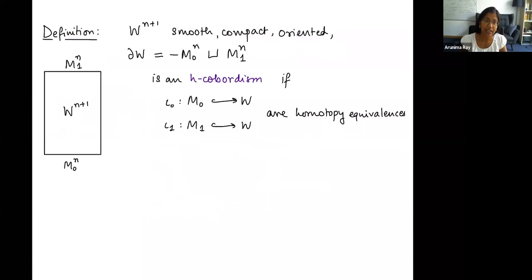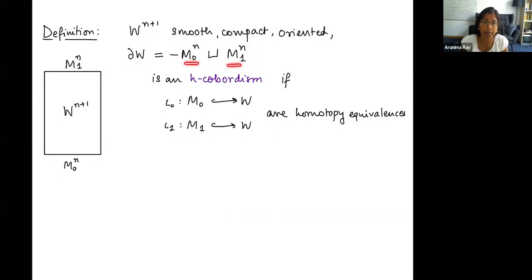So let's get started. Here is the definition of an h-cobordism. We have an n+1-dimensional manifold that is smooth, compact, and oriented, and its boundary has two components, M0 and M1. The boundary is written as negative M0 union M1, where the minus sign means I'm taking the orientation reverse of M0. So if I stopped here, W would be a cobordism between M0 and M1.